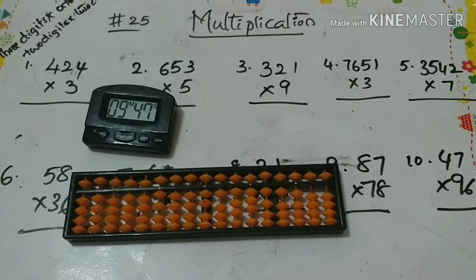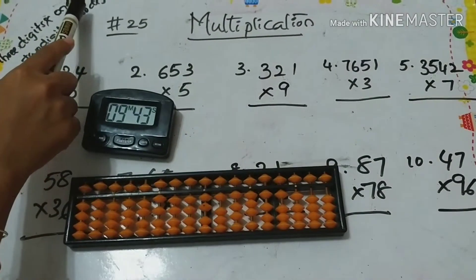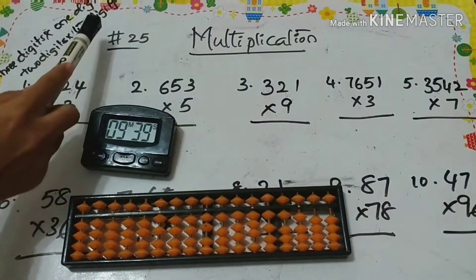Today in this class we are going to discuss three digit times one digit and two digit times two digit.